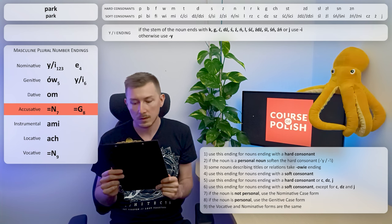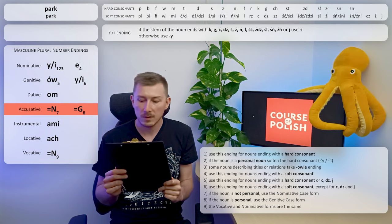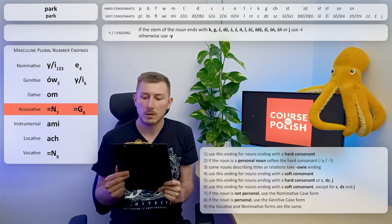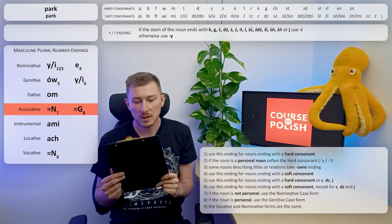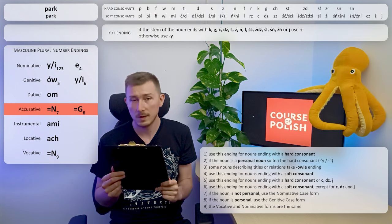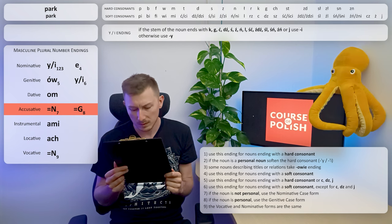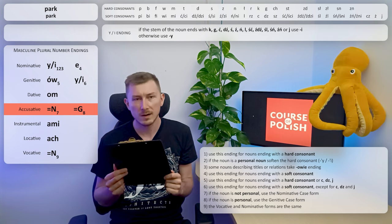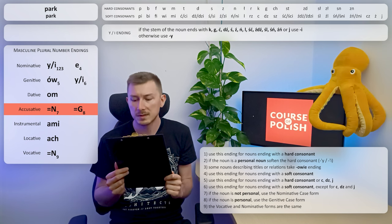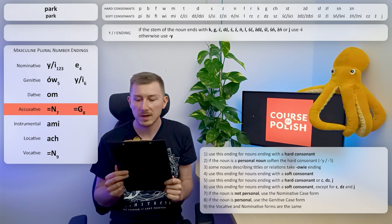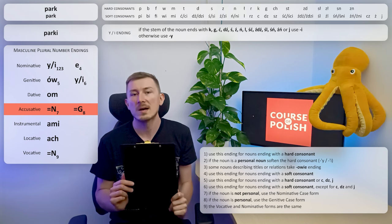Accusative. Again we have two options. It can be either the same as nominative case or the same as genitive case. Let's read rule number seven: if the noun is not personal, use the nominative case form. PARK is not personal, so it will be the same as nominative case. So the form is PARKI.